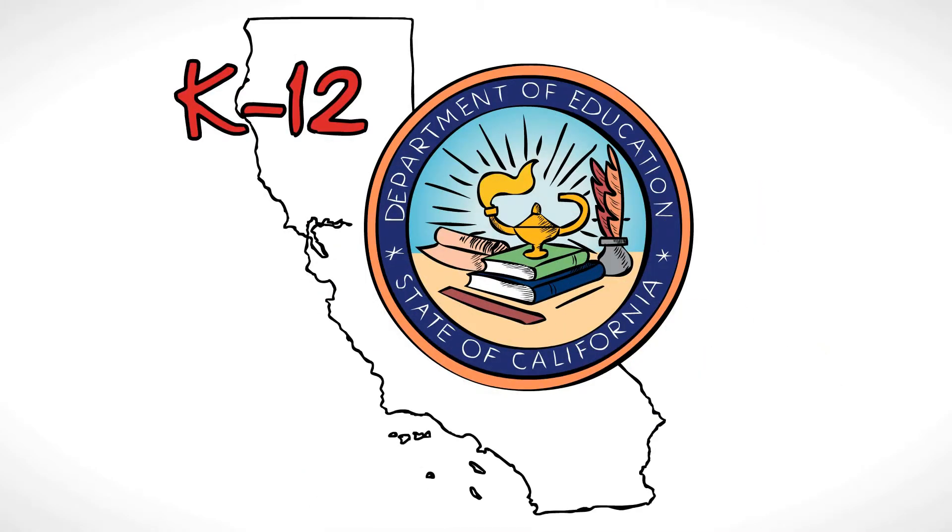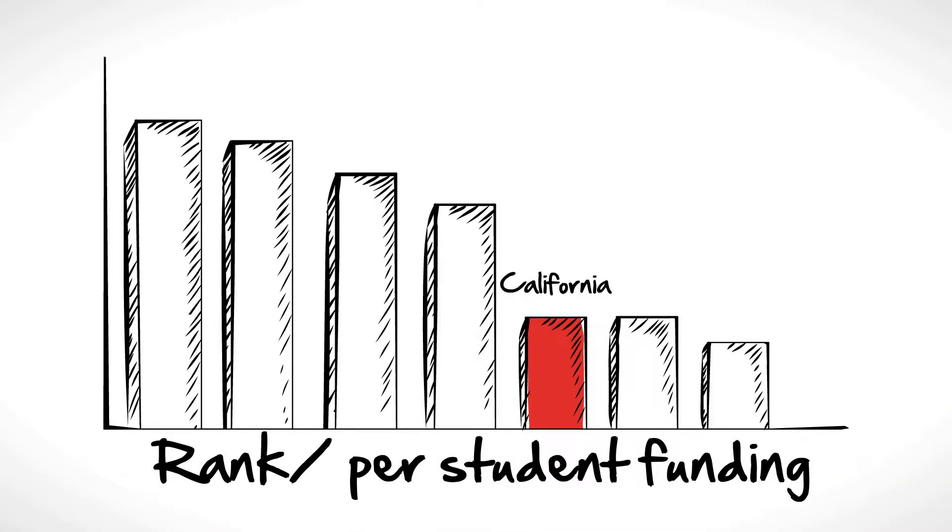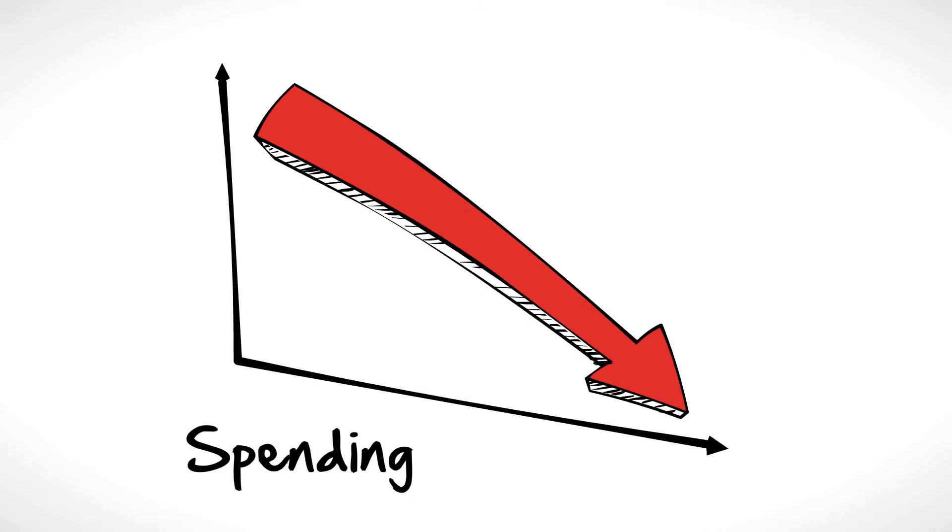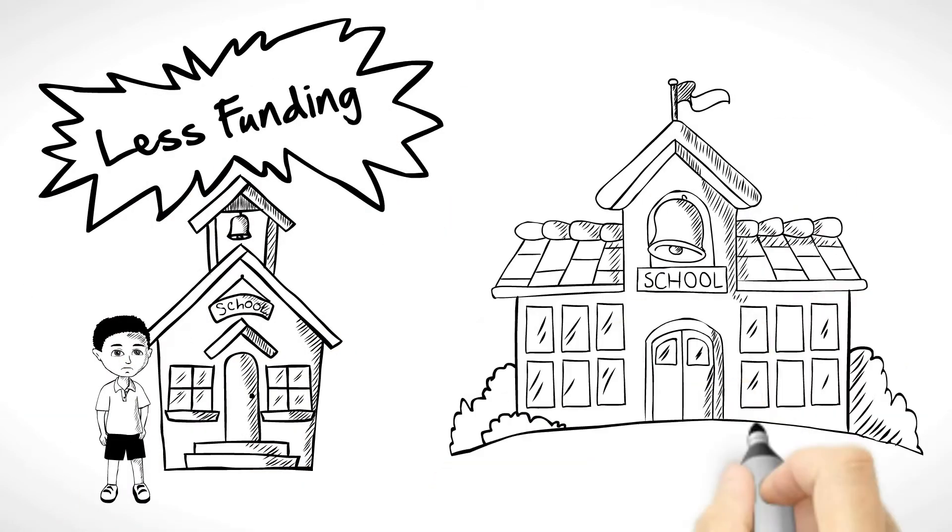K-12 education in California is in crisis. Not only does California rank near the bottom in per-student funding, and spending has been drastically cut, but students in low-income schools receive less funding than kids in well-to-do neighborhoods.